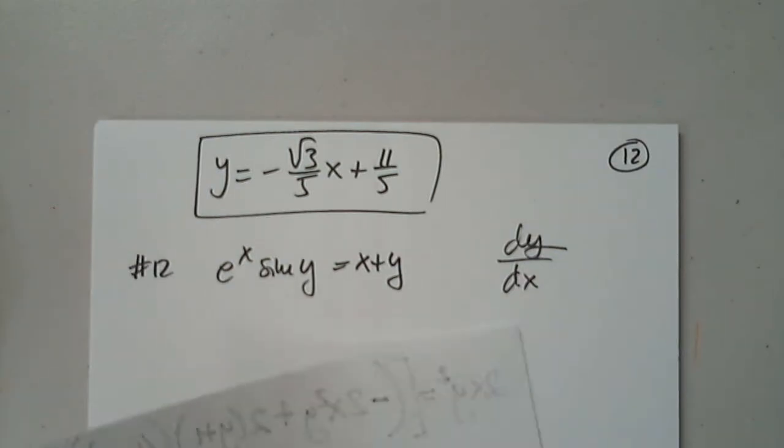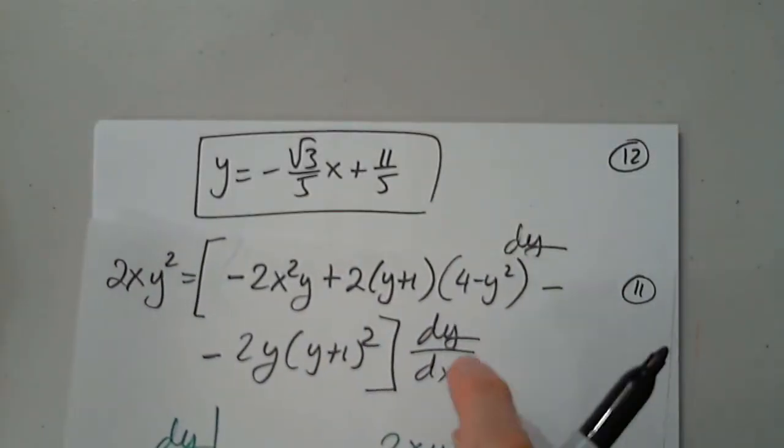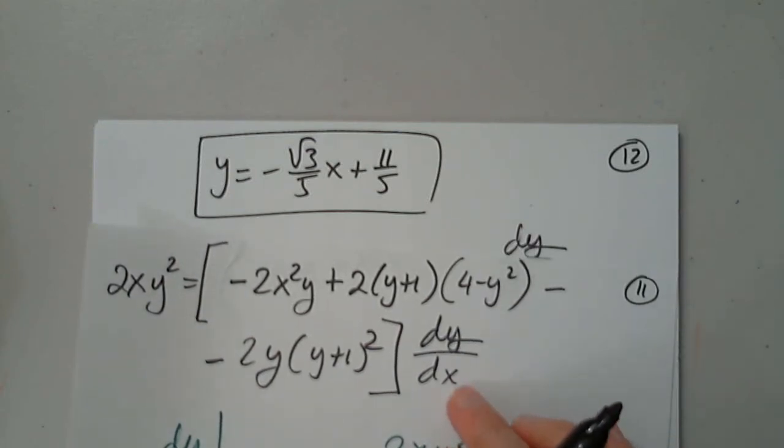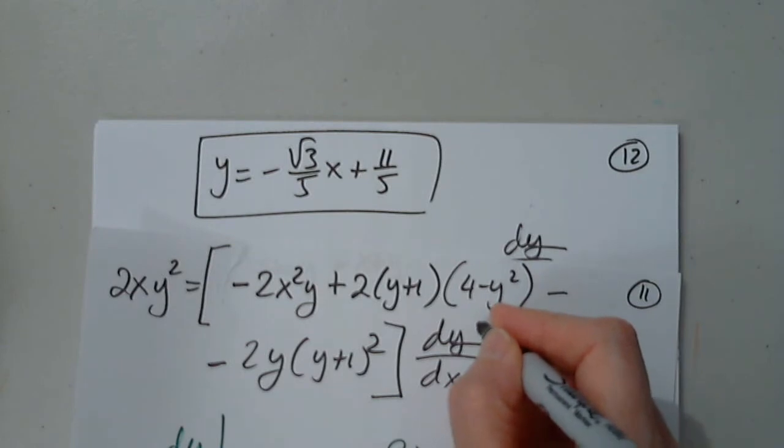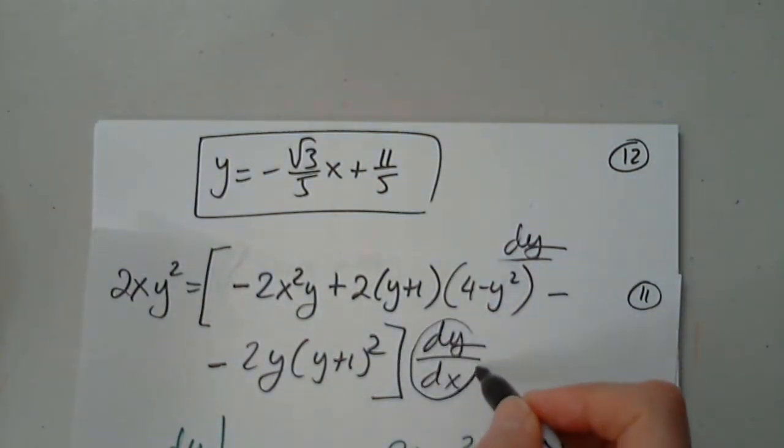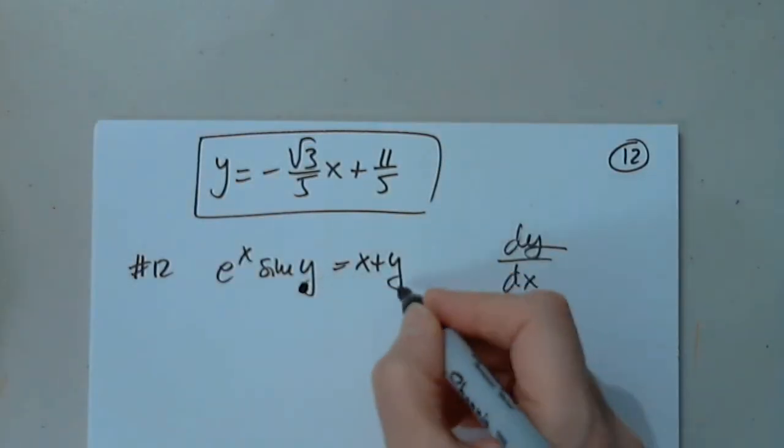I hope you understand why writing y prime would be a problem. It's the same thing, but it would be a problem. Because if I omit the prime by mistake, or I don't see it, but this you cannot miss. That's why we're using this notation in implicit differentiation. The other reason is to remember that this is a function.